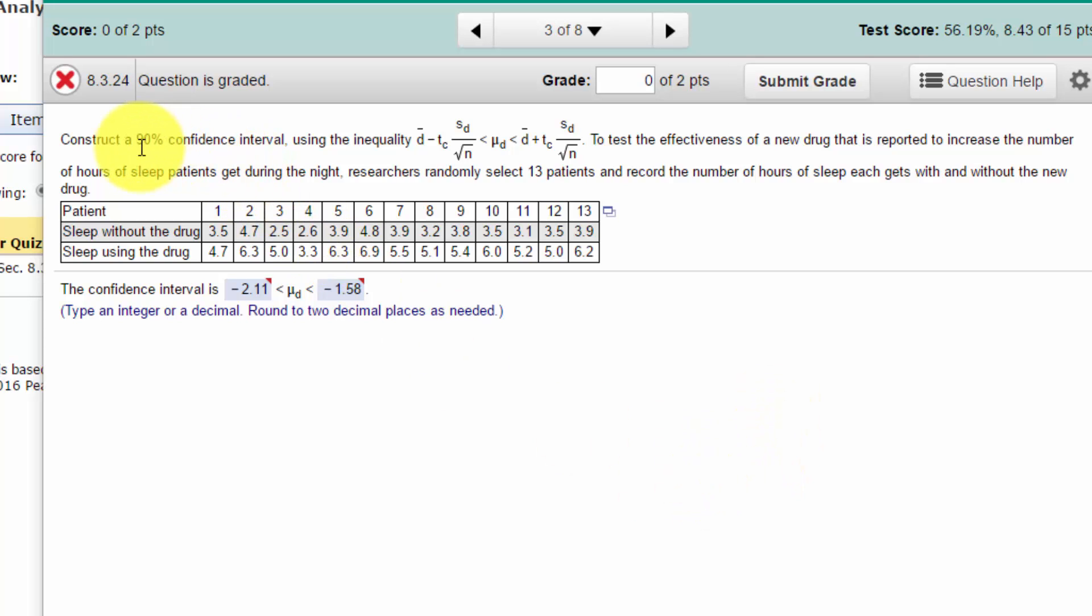They want a 90% confidence interval using the inequality of the difference d-bar minus t sub c, where there's the mean difference mu sub d, and plus d-bar plus the t sub c. That may confuse some people when the question is asked that way, but really they just want to know the lower limit and the upper limit around that mean of D.